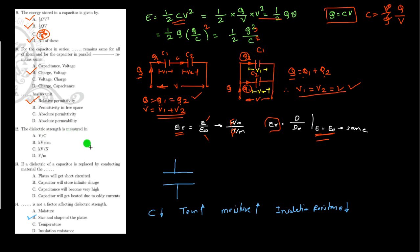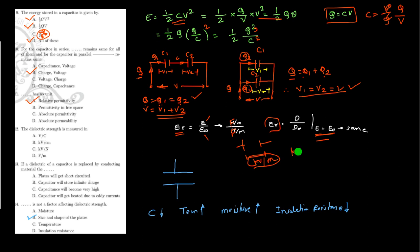Dielectric strength is measured in what unit? Dielectric strength is the ability of a dielectric material to withstand voltage, and it is inversely proportional to distance. So it is voltage divided by distance — kilovolts per meter or kilovolts per centimeter. The correct formula is voltage divided by distance, hence the unit is kilovolts per centimeter.